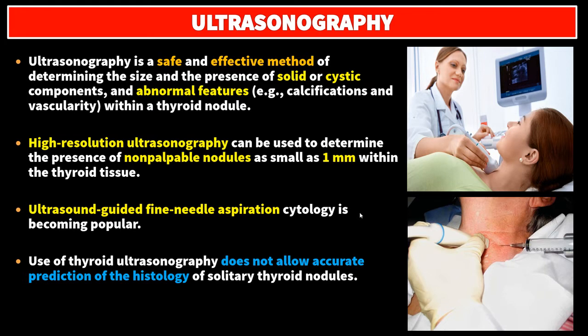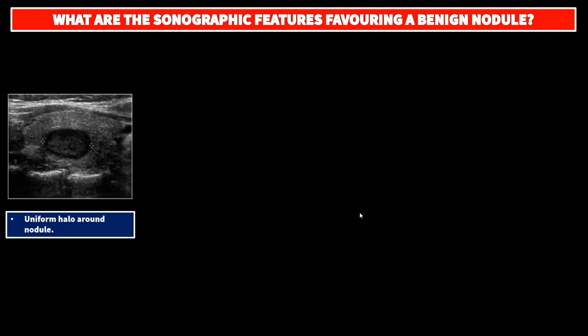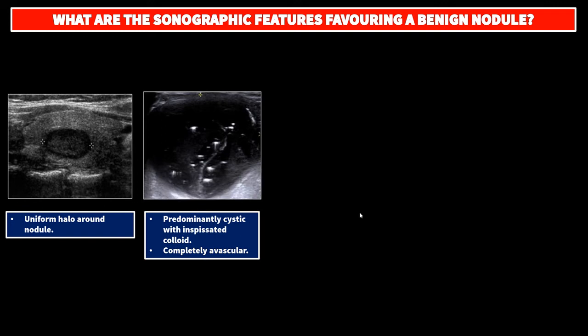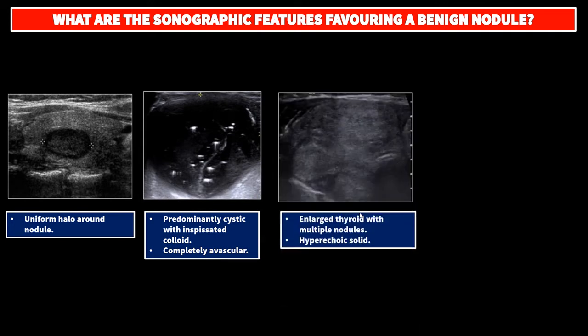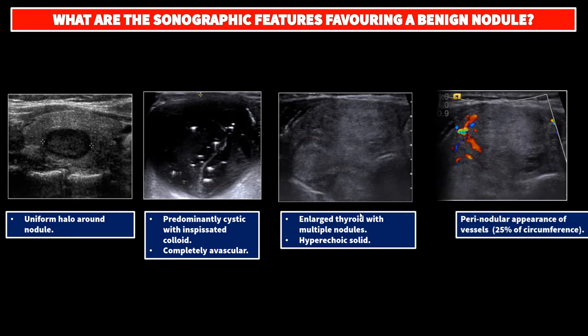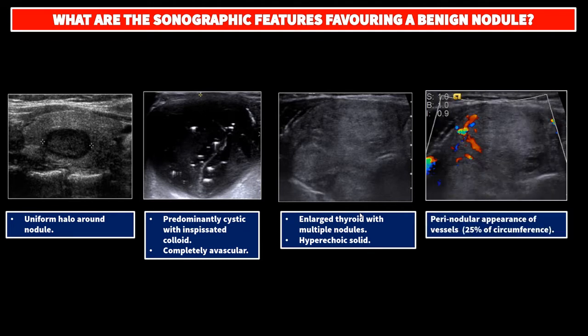Use of thyroid ultrasonography does not allow accurate prediction of the histology of solitary thyroid nodules. What are the sonographic features favoring a benign nodule? These include: uniform halo around the nodule, predominantly cystic with inspissated colloid, completely avascular, a large thyroid with multiple nodules, hyper-echoic solid, and perinodular appearance of vessels in around 25% of the circumference.